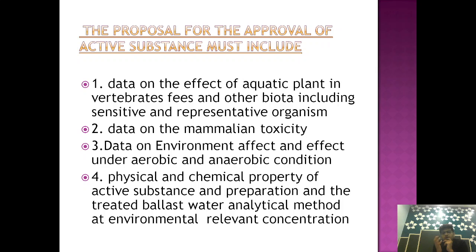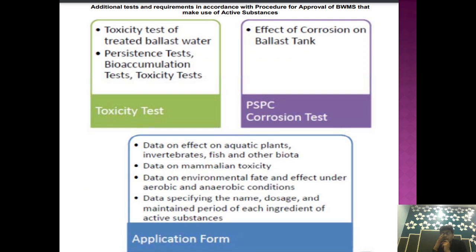The data that needs to be provided to IMO includes: data on effects on aquatic plants, invertebrates, and other biota including sensitive and representative organisms; data on mammalian toxicity; and data on environmental effects and behavior under aerobic and anaerobic conditions. It is very important to test how the active substance behaves under anaerobic conditions, because it may emit certain types of chemicals or gases that are hazardous to human health or the environment. All of this is tested by IMO before granting basic approval.